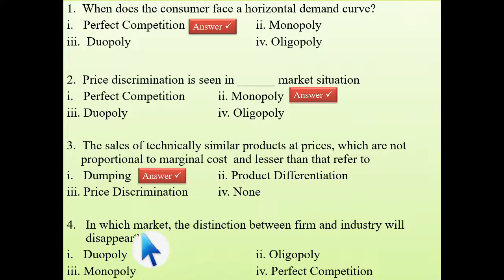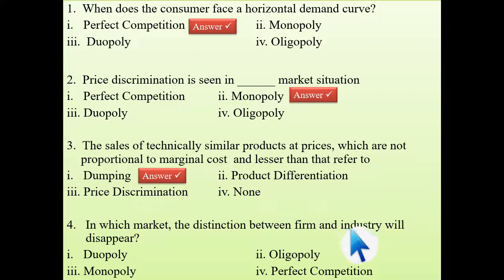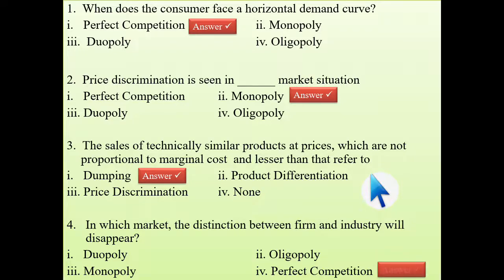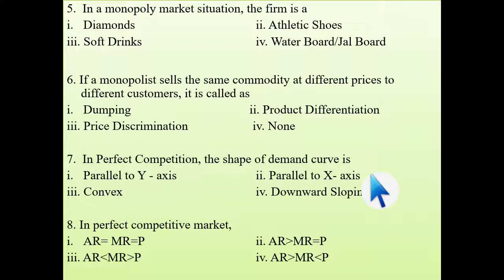Fourth question: in which market does the distinction between the firm and industry disappear? That means there is no difference between the firm and industry. This is possible in only one market — that is the perfect competitive market.